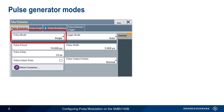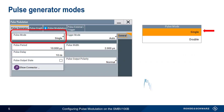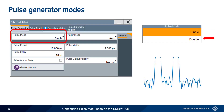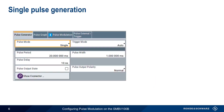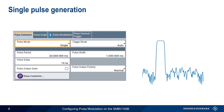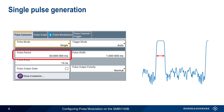There are two modes for the pulse generator: single pulse and double pulse. Single pulse mode sends single pulses with a given pulse width and a given pulse period, or repetition interval between pulses. Keep in mind that the pulse width must be shorter than the pulse period.